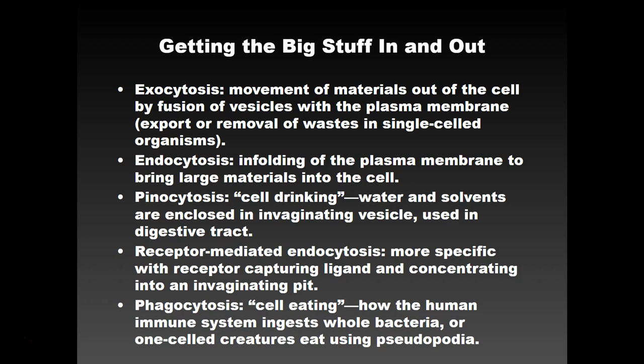If you want to get big stuff in or out of your cell, there are other mechanisms: exocytosis, endocytosis, pinocytosis, receptor-mediated endocytosis, and phagocytosis. Exocytosis is the movement of materials out of the cell by fusion of vesicles with the plasma membrane. A large thing inside a vesicle — which looks kind of like the plasma membrane — fuses with the plasma membrane and releases its contents.